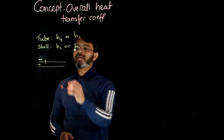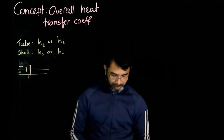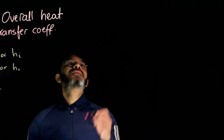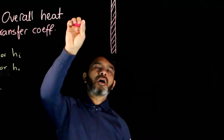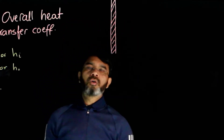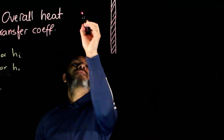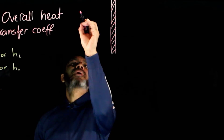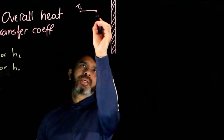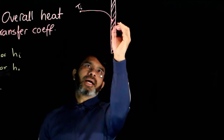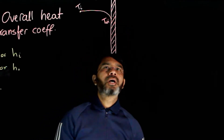If you take a small segment of these pipes and draw what is happening there, you can consider a small segment of the pipe. Inside is the hot fluid and outside is the cold fluid. Looking at the temperature profile of the hot and cold fluid, at the bulk that is the temperature of the inside fluid, its temperature will change and at the wall that is the temperature T_WI.